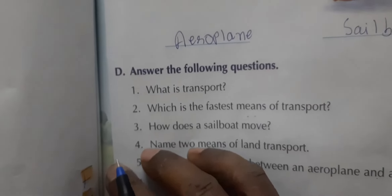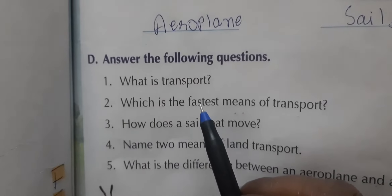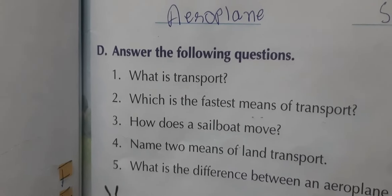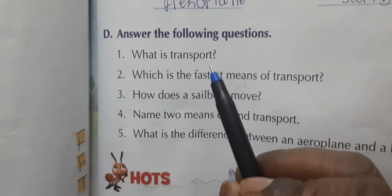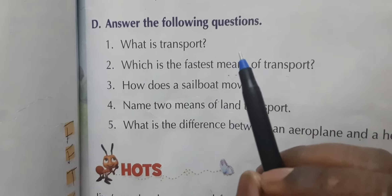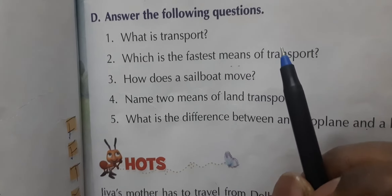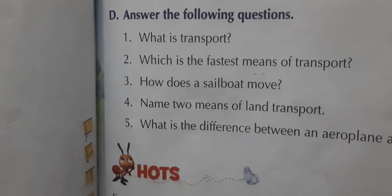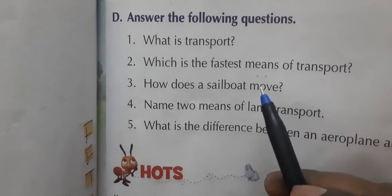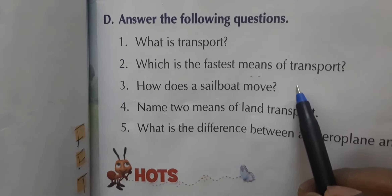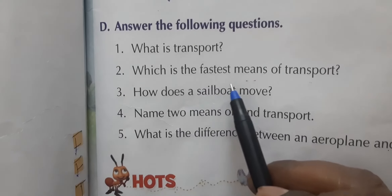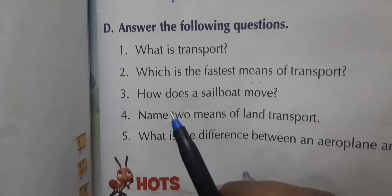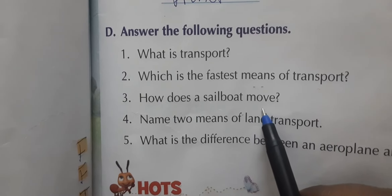Now question D — answer the following questions. What is transport? Transport means a system which carries people or goods from one place to another. Which is the fastest means of transport? An aeroplane is the fastest means of transport.